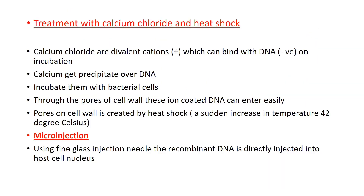Why do we use treatment with calcium chloride and heat shock? Our DNA is negatively charged. The membrane potential is also negative. A negative–negative repulsion will occur. That's why we affect this by adding a positive ion. It is called Calcium Chloride. They are divalent cations — calcium is 2+, valence is 2. They are positively charged, and DNA is negatively charged.